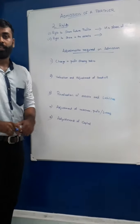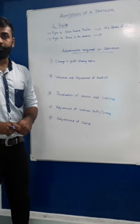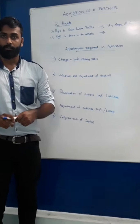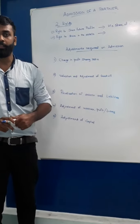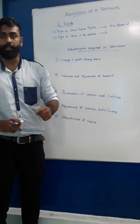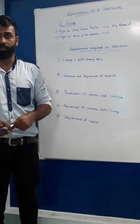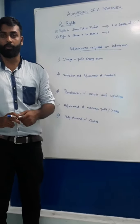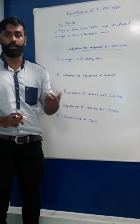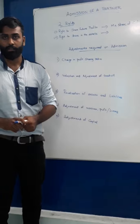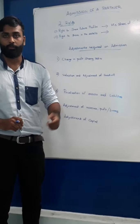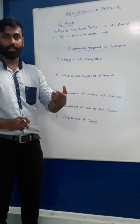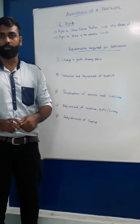For example, if he is getting a 1/5 share, then he has to bring 1/5 portion of the total goodwill. The valuation of goodwill we have already studied in Chapter 2, and we can calculate 1/5 of that goodwill — he has to bring that amount into the business.